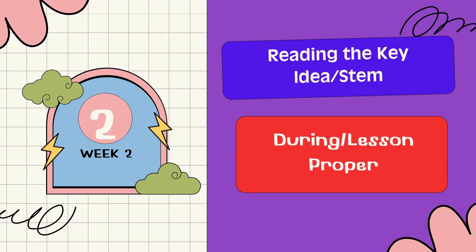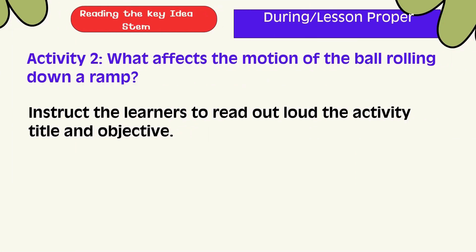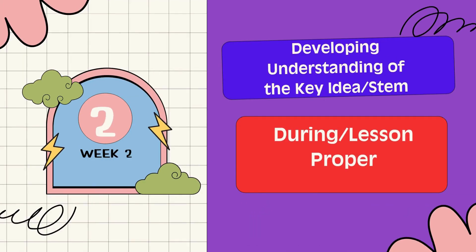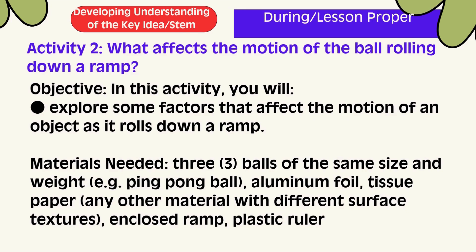Reading the Key Ideas. Activity 2: What Affects the Motion of the Ball Crawling Down a Ramp? In this activity, you will explore factors that affect the motion of an object as it rolls down a ramp. Materials needed: 3 balls of the same size and weight — for example, a ping pong ball, aluminum foil, tissue paper, or any other material with different surface texture.